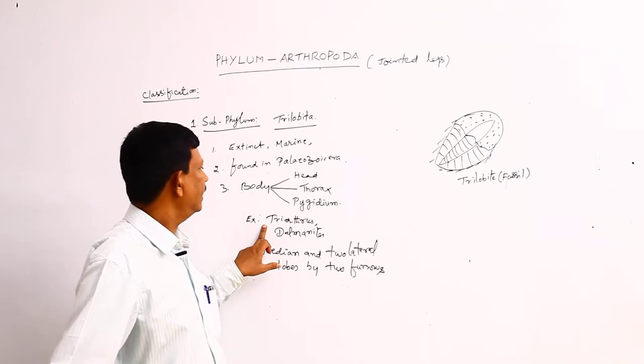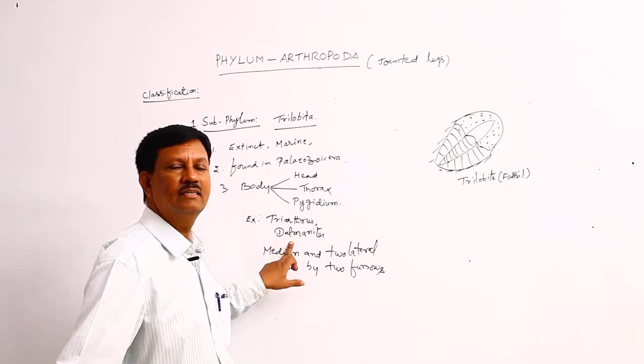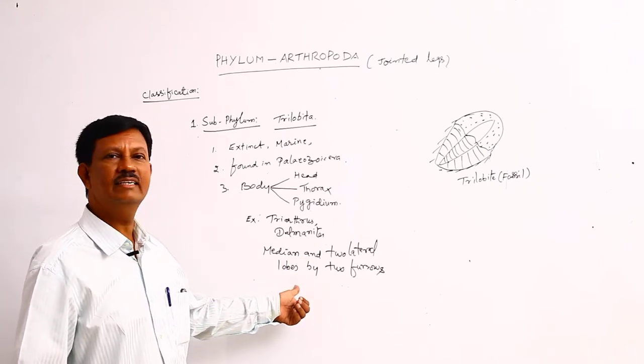Examples include triarthrites and dolmanites. These two examples come under this subphylum. It does not contain any classes.